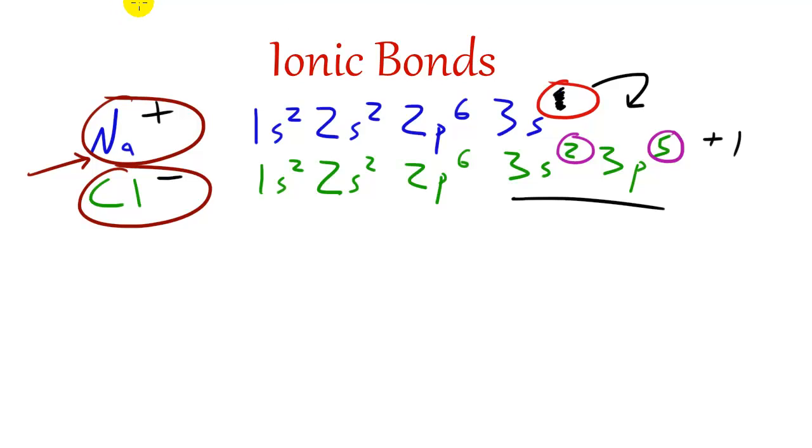So again, an ionic bond is basically two or more ions that attract each other because they have opposite attractions. And that's basically it. That's the concept behind an ionic bond, and there is another type of bond, but we're going to be talking about that later on.